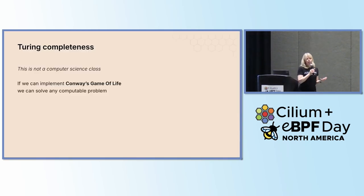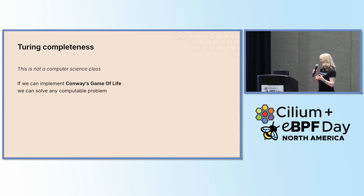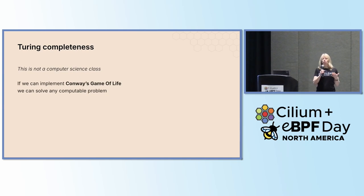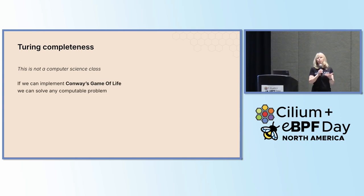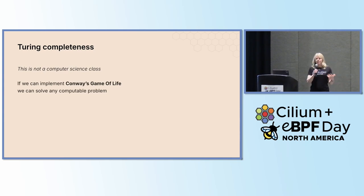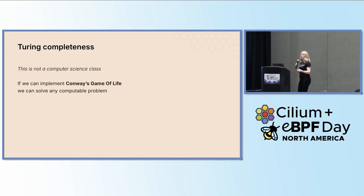Because I only have a few minutes, I'm not going to dive particularly deep into what Turing completeness means. But what I am going to show is that we can implement something called Conway's Game of Life in EBPF. And if you can implement Game of Life in a language, then it demonstrates that that language is what's called Turing complete, which means that you can use it to implement any computable problem.